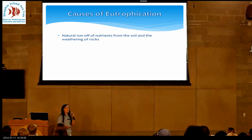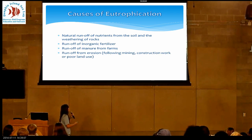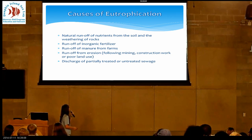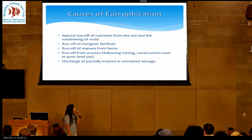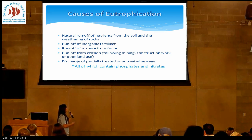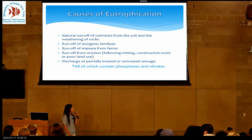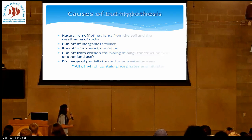There's only one natural cause of eutrophication and it's from the runoff of nutrients from the soil. The rest are all man-made problems, from inorganic fertilizer to farms. All of these problems are from phosphates and nitrates.